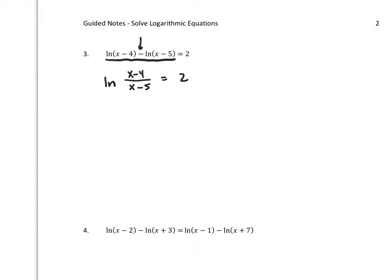Now rewrite that in exponential form. There's an e here. That's going to be e^2 equals (x-4)/(x-5). We've talked about that property. Now, let's multiply both sides by (x-5).